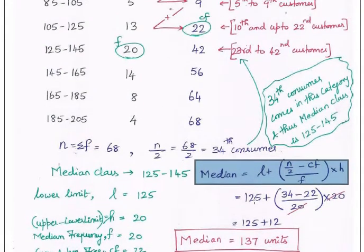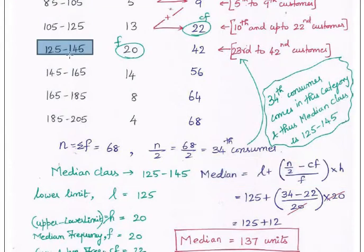You can very easily verify this answer: the value you get should be within the median class. If you get 90 or 200 as the median value, those are junk values and somewhere in your calculation you made a mistake. The median must lie between 125 and 145, so if any other value comes, your answer is wrong — check that out.